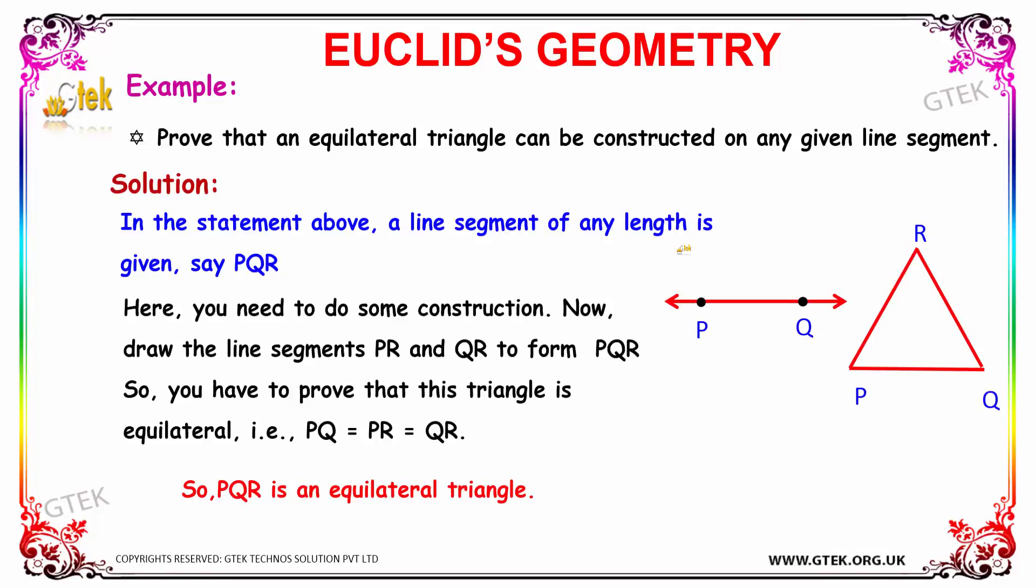Let's go with the next example. We have to prove an equilateral triangle can be constructed on any given line segment.